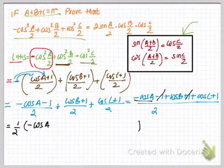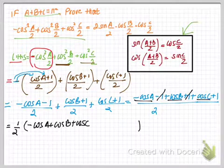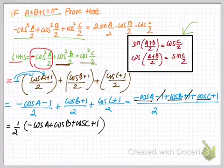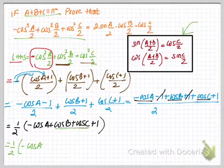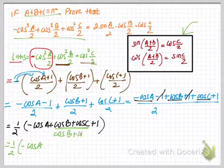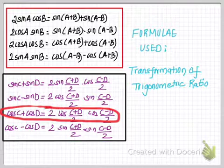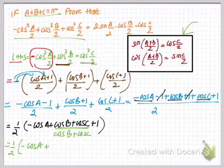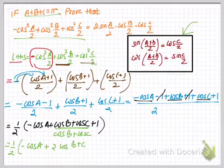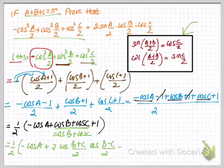So what we have is (1/2)(−cos A + cos B + cos C + 1). Now I'm going to use the sum-to-product formula for cos B + cos C. We have the formula cos C + cos D equals 2cos((C+D)/2)·cos((C−D)/2). In place of C and D we have B and C, so this becomes 2cos((B+C)/2)·cos((B−C)/2), plus 1.